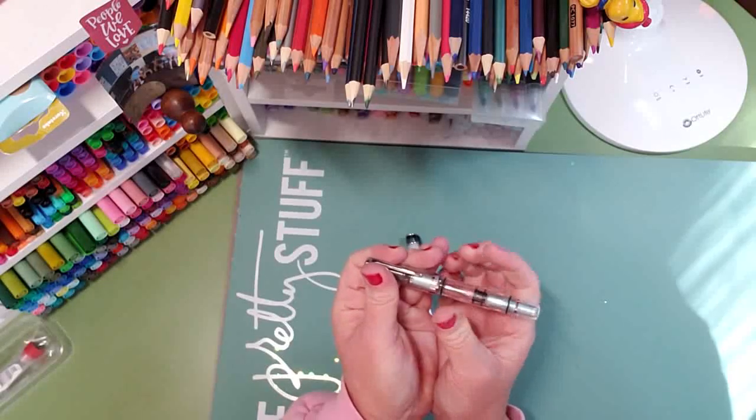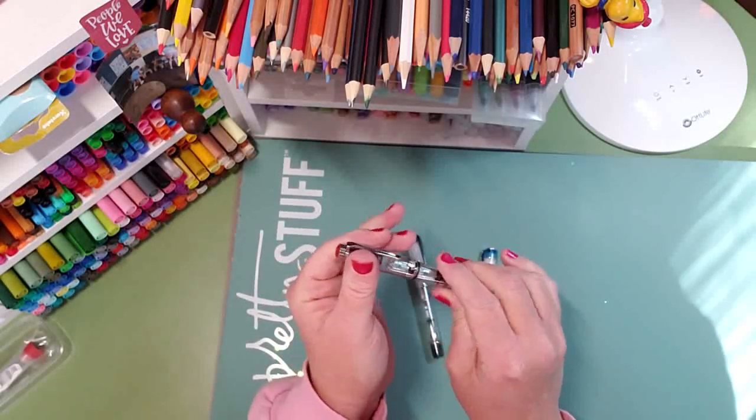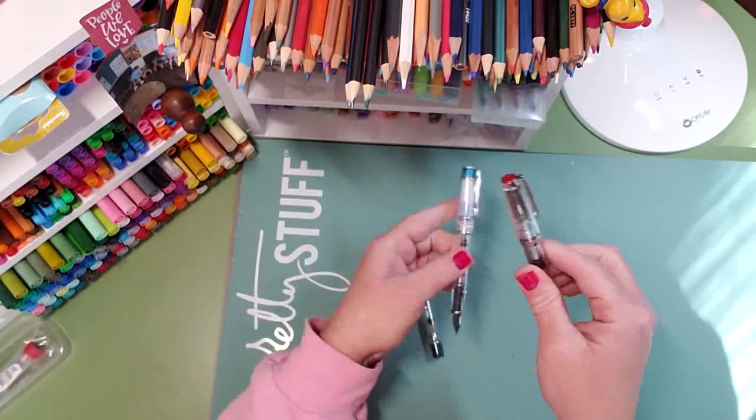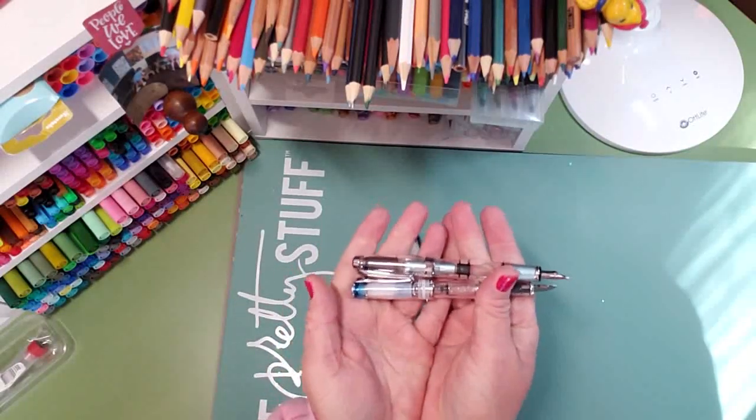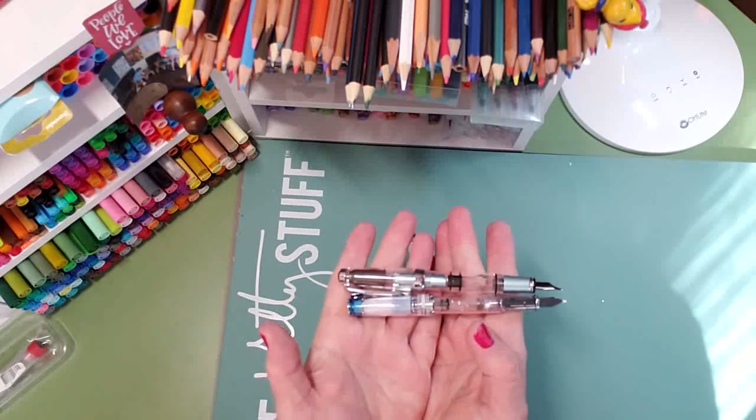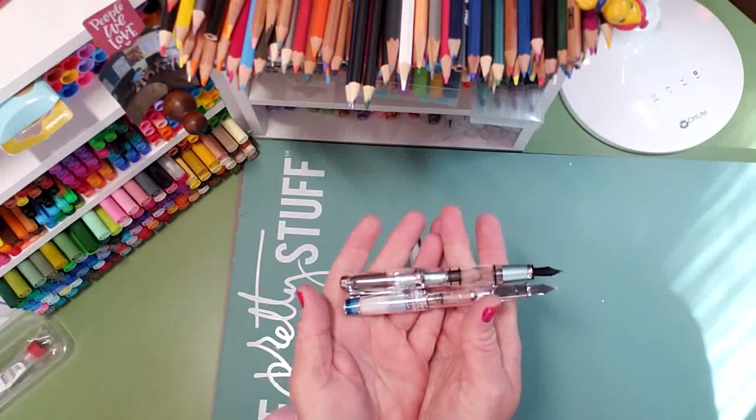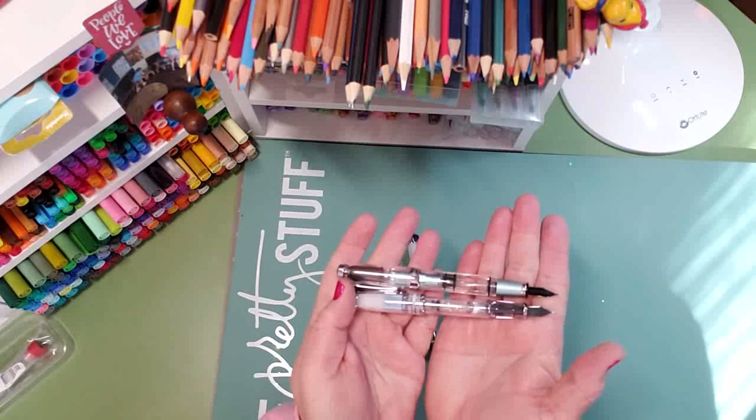And same thing, pulls apart, post just like that. And this one you twist, and you twist. And there is a comparison of them posted. Now posted, the Twsbi mini is longer as you can see, just slightly.